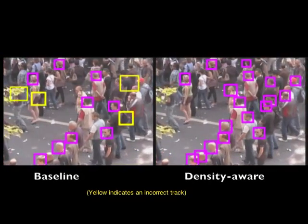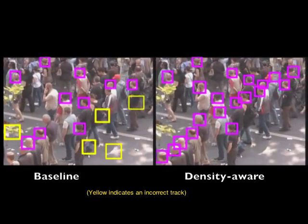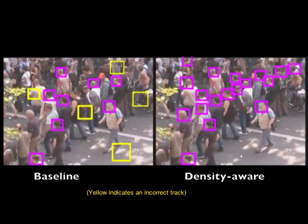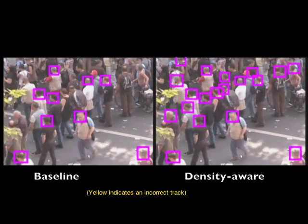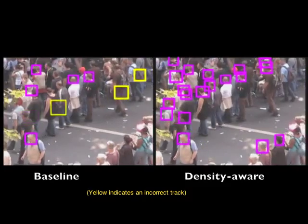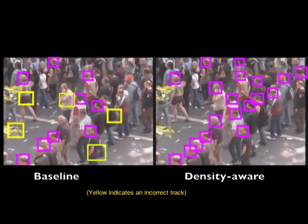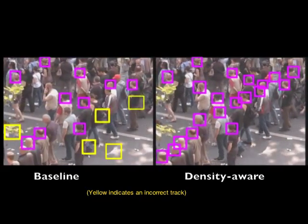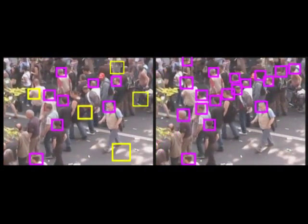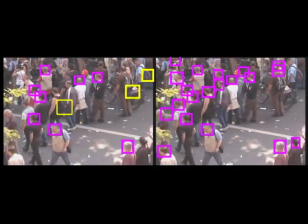Here we see the detection and tracking results obtained by using geometric filtering and agglomerative clustering on the left, and using the proposed joint density and detection framework on the right. Yellow bounding boxes indicate incorrect tracks. These results demonstrate how the optimization of such an energy function significantly improves person detection and tracking in crowds.